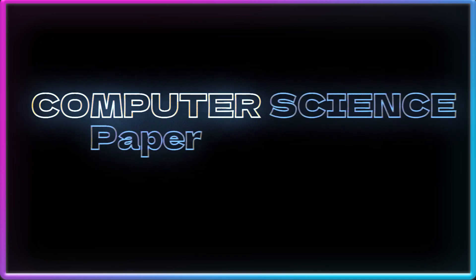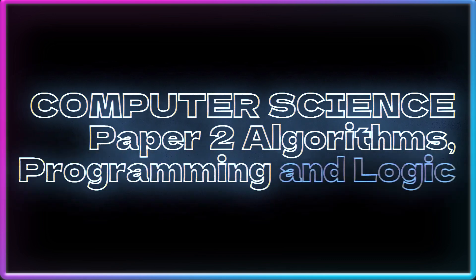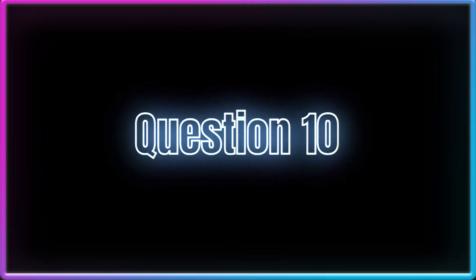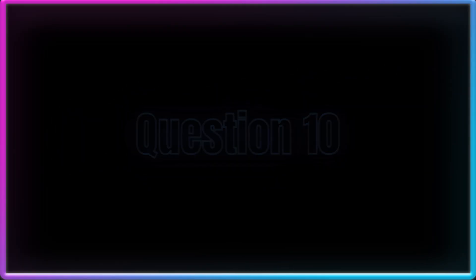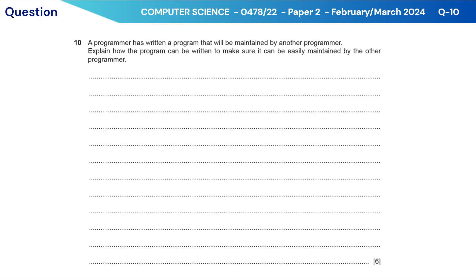Hi guys, welcome to this video. Today we are going to solve question 10 of the 047822 February-March 2024 past paper. The question is: a programmer has written a program that will be maintained by another programmer. Explain how the program can be written to make sure it can be easily maintained by the other programmer.